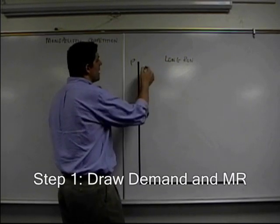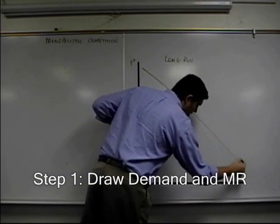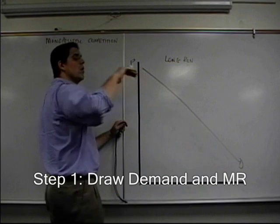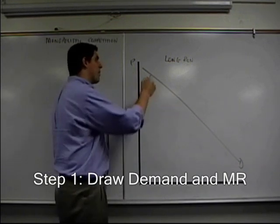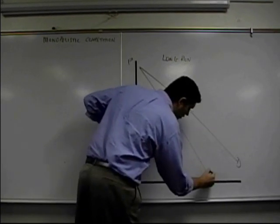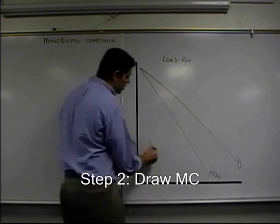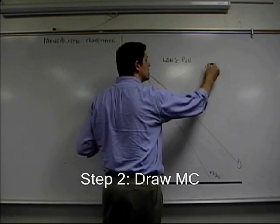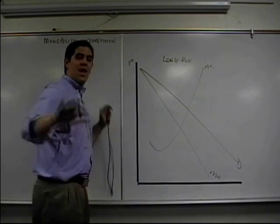For the long run equilibrium, the demand curve is downward sloping. Go ahead and draw that on your piece of paper. And because they have to lower the price of the previous units as well and they can't price discriminate, the marginal revenue is below the demand. It looks like that. Marginal cost, as you know, goes down and up. It always looks the same. It looks just like this.